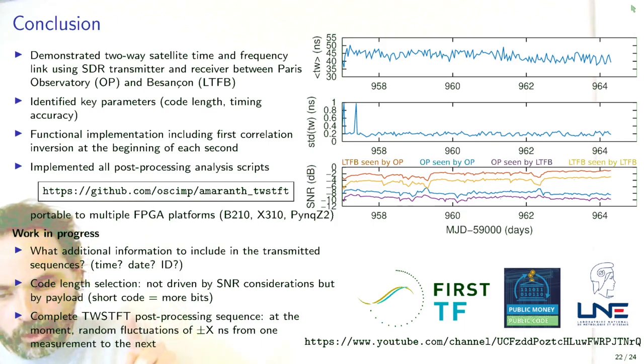As a conclusion to this demonstration, we have performed multiple measurements between Paris observatory and Besançon observatory. We do reach a standard deviation in the sub 200 picosecond range as aimed. We do have signal-to-noise ratio that are consistent with SATRE transfer requirements. If we convert this into C over N0, we end up having a carrier-to-noise density of about 50 dB hertz, which is consistent with the SATRE communication requirements. We do have a repository allowing to synthesize this demonstrator for multiple platforms, including the ETUS Reserves B210, the ETUS Reserves X310, or the standalone FPGA PNG Z2.